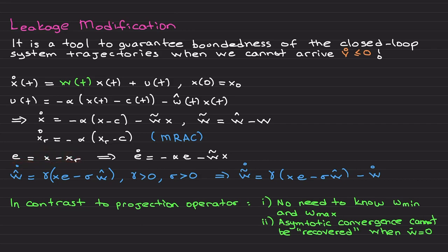We would like to drive x to the reference model state x_r, so we construct this error signal. Once you find the dynamics for error, you have e dot equals minus alpha e minus w tilde x.